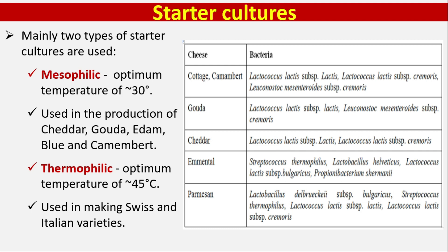For Emmental: Streptococcus thermophilus, Lactobacillus helveticus, Lactococcus lactis subsp. bulgaricus, and Propionibacterium shermanii. For Parmesan cheese, starter cultures include Lactobacillus delbrueckii subsp. bulgaricus, Streptococcus thermophilus, Lactococcus lactis subsp. lactis, and Lactococcus lactis subsp. cremoris.